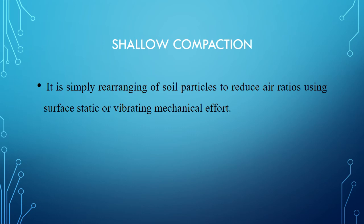Shallow compaction is one of the earliest, cheapest, and most commonly used techniques to improve the physical and mechanical properties of loose soil. It is simply the rearranging of soil particles — a field or surface compaction. It is a mechanical modification given to the soil to pack the soil particles closely, or to densify the soil.